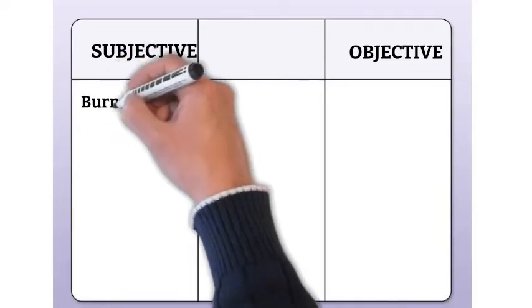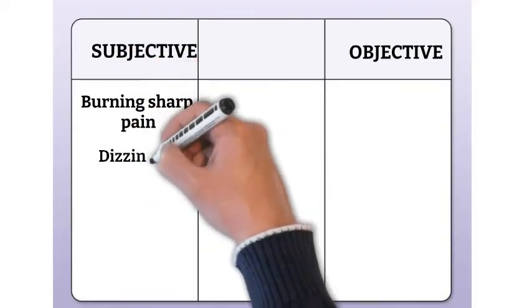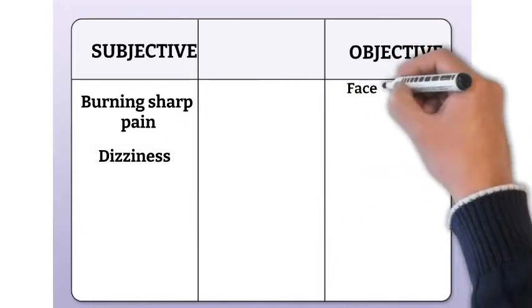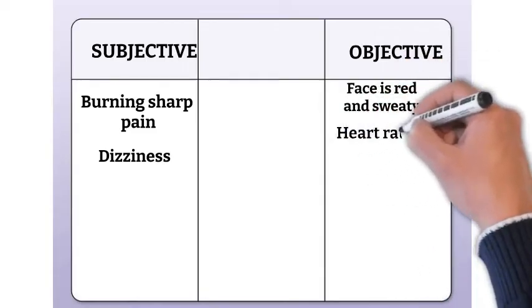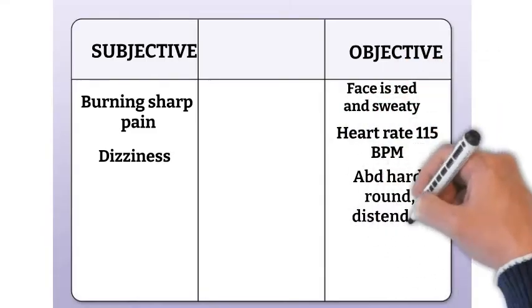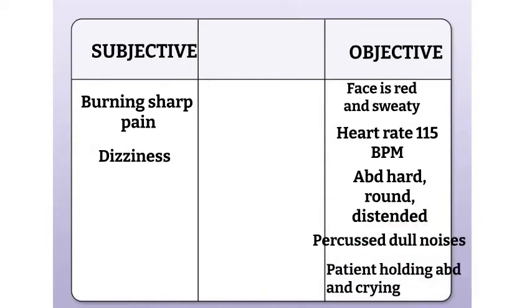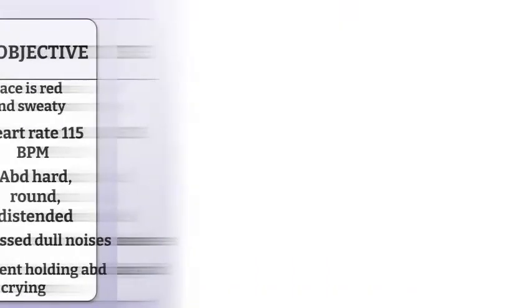This is the breakdown for our final scenario. Under subjective, we have burning, sharp pain and dizziness. Under objective, we have a patient whose face is red and sweaty, heart rate is 115 beats per minute, abdomen is hard, round, and distended with dull noises to percussion, and the patient is holding their abdomen and crying.